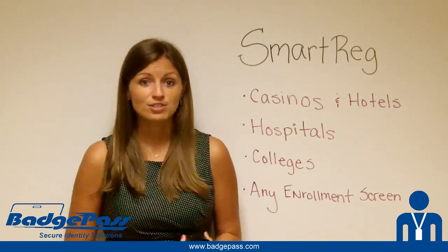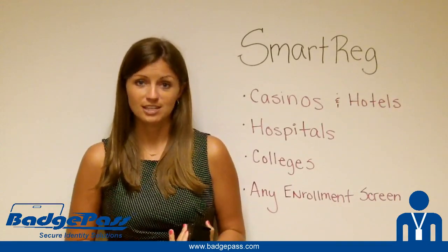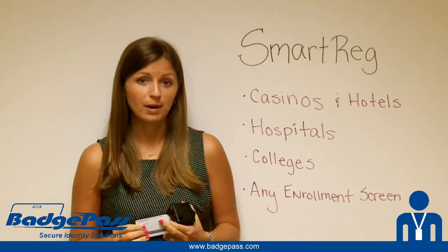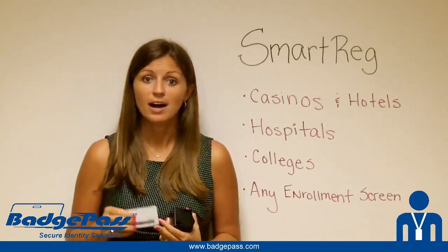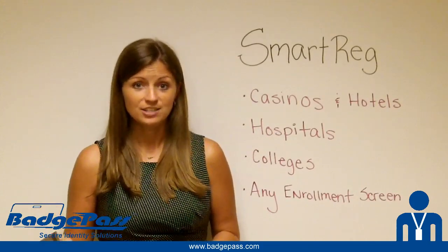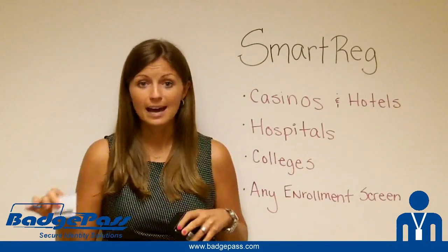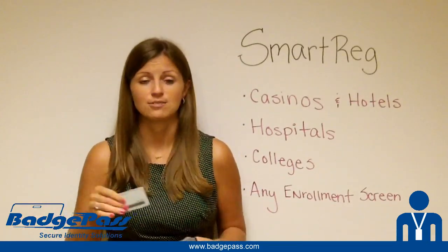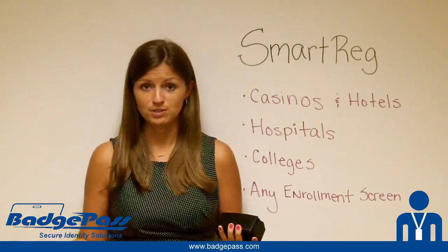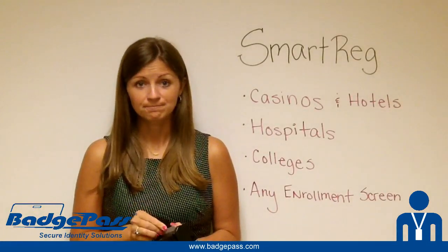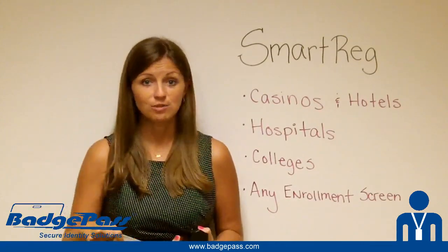Smart Reg is basically just an automated enrollment product. What it does is it captures the information off a state or federally issued ID, like a driver's license, and it automatically parses the data from the 2D barcode or the magnetic stripe on the back of that ID onto any enrollment screen. It's completely application independent, so it runs in the system tray on the bottom of your customer's computer, and they just scan the driver's license and Smart Reg automatically parses that data onto the enrollment screen.